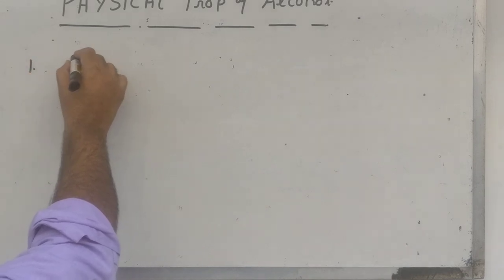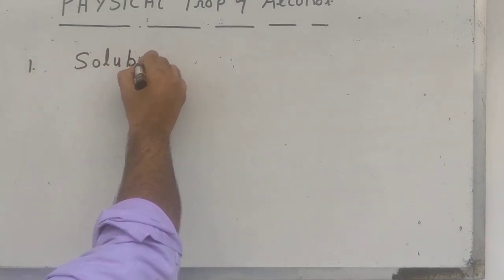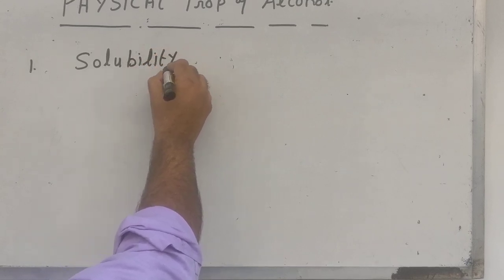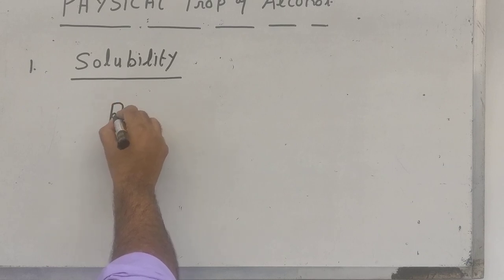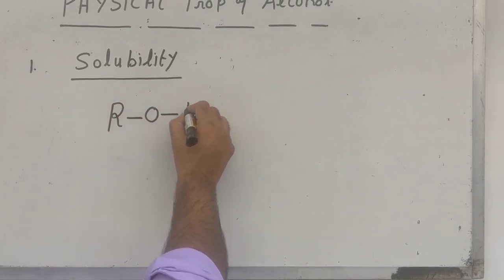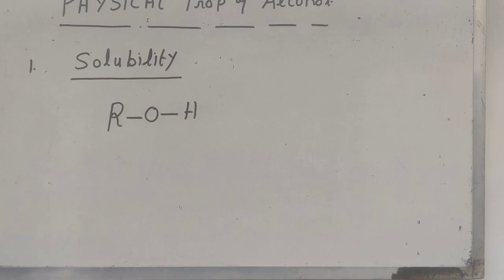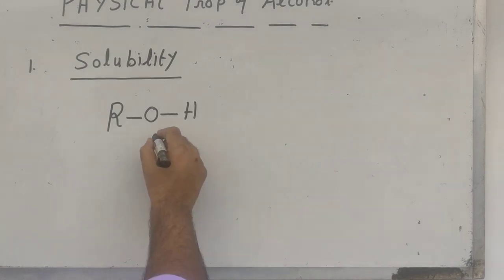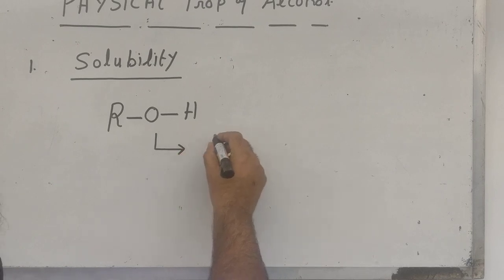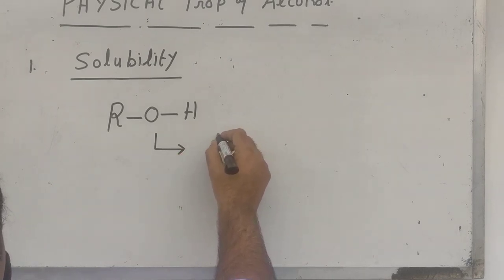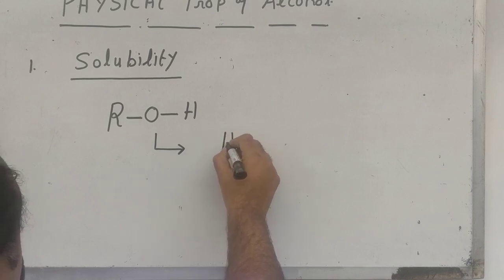First of all we are going to talk about solubility. All of us know alcohols are organic compounds, and organic compounds are supposed to be soluble in non-polar solvents like benzene, carbon tetrachloride, hexane, and so on. Alcohol, no doubt, they're soluble in non-polar solvents like benzene, hexane, CCl4. But it has been found that alcohols, though they are covalent compounds, most of them up to 10 carbon atoms, are soluble in water — they also mix with water.